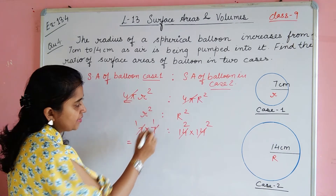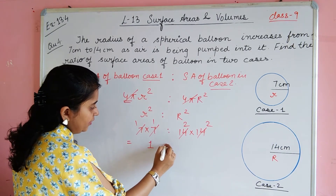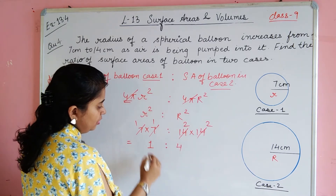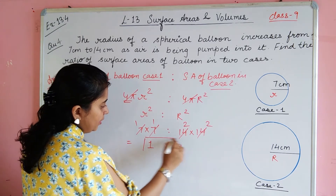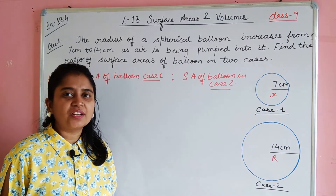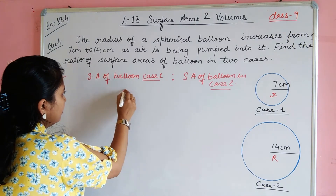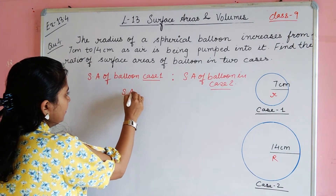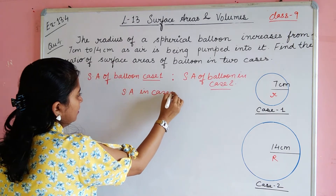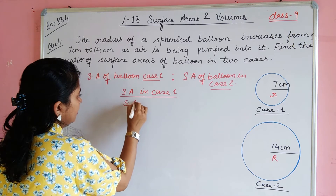So here it is 1 multiplied by 1, you get ratio 1, and 2 multiplied by 2 gives 4. And this is our answer — the ratio is 1:4.